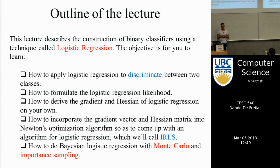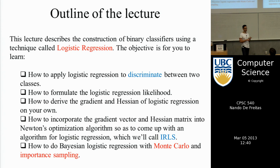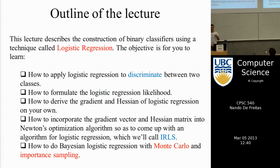In this class, we will understand what logistic regression is, make a connection of logistic regression to neural networks, derive the gradient and the Hessian for logistic regression. Once we have the gradient we can implement stochastic gradient descent, and once we have the Hessian we can implement Newton's method. I will show you code for doing this using Newton's method.